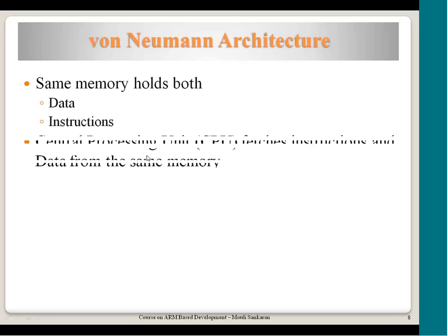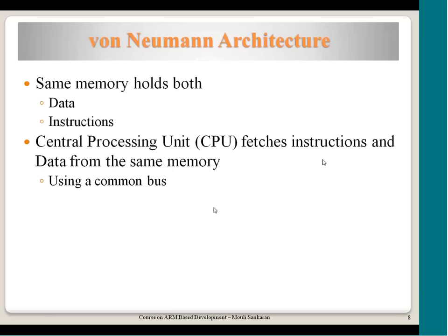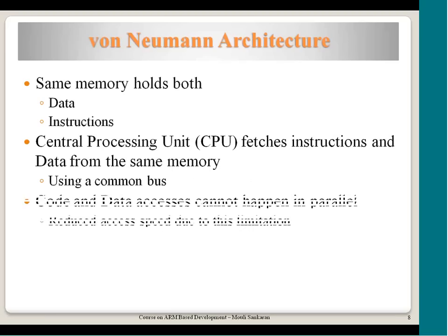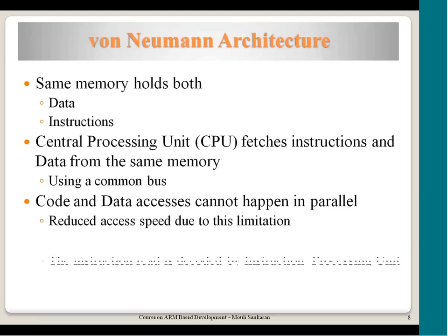The CPU fetches instructions and data from the same memory using a common bus. Data and instruction accesses cannot happen in parallel, which reduces speed due to this constraint.